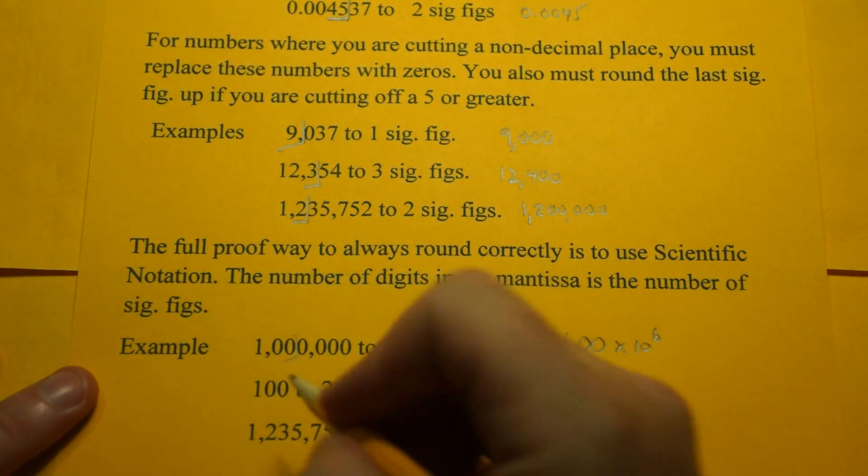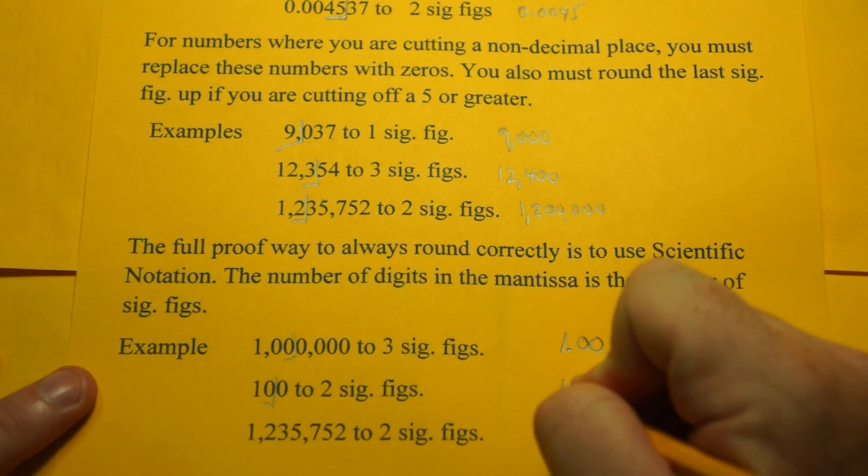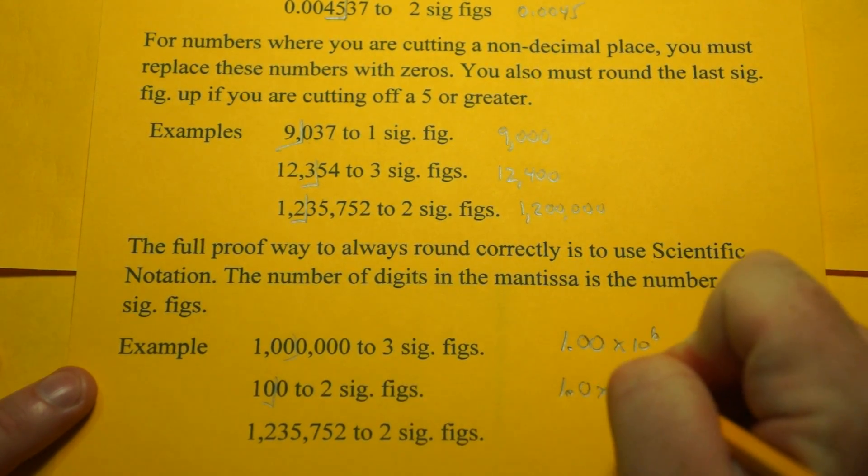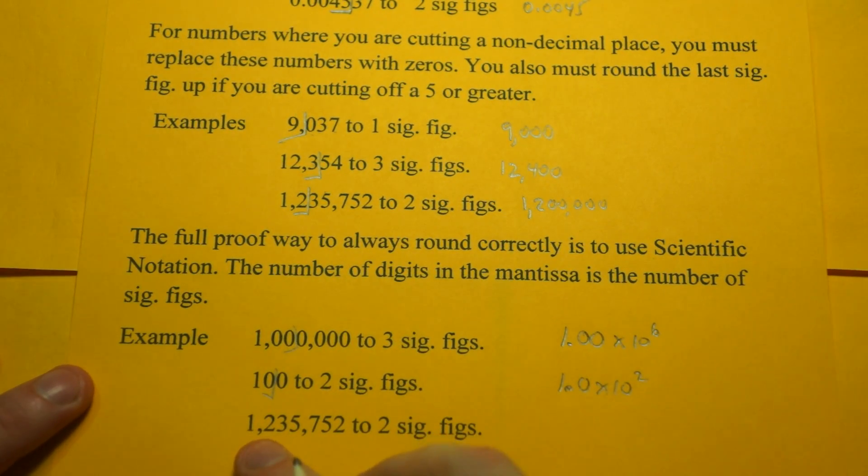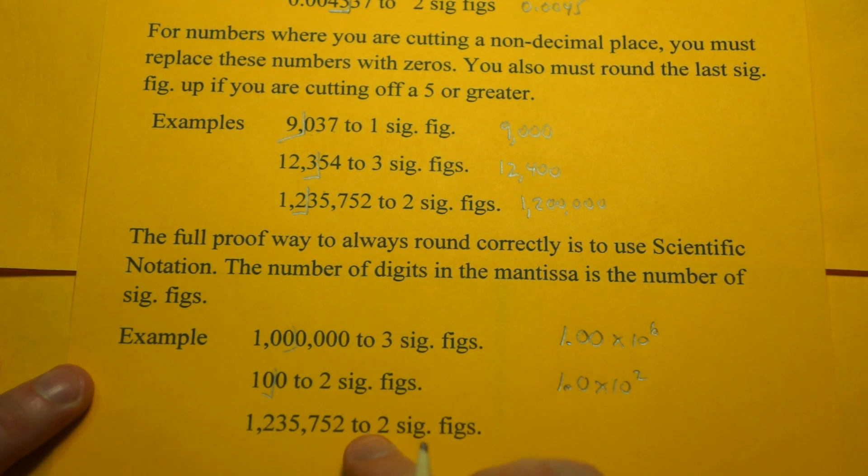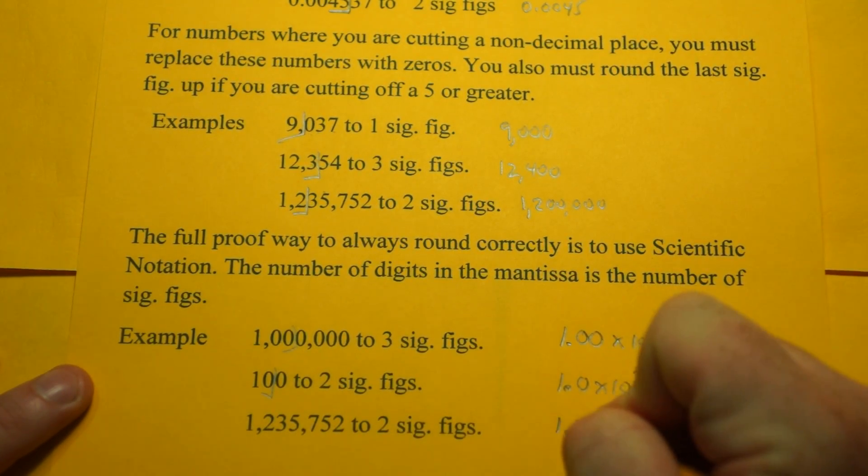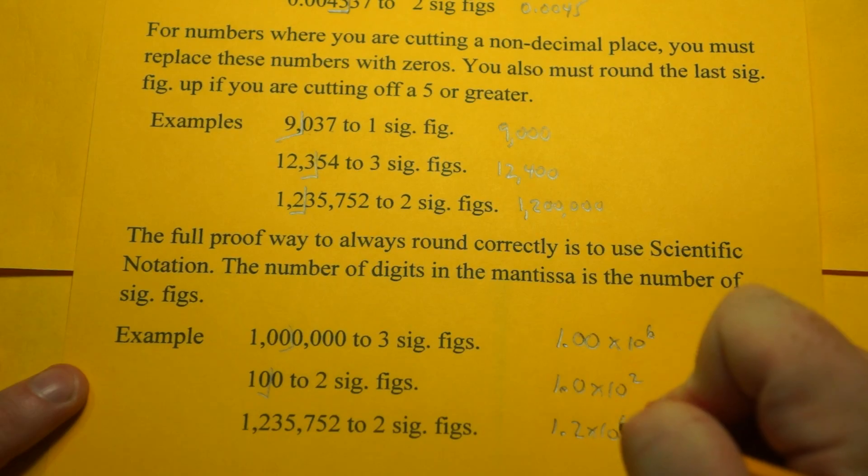100 to 2 sig figs, well, can't do that unless you do it this way. 1.0 times 10 to the 2nd. And the same number up here to 2 sig figs, 1.2 times 10 to the 6th.